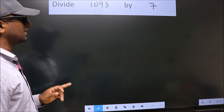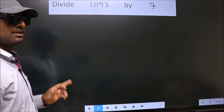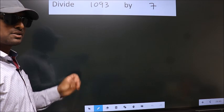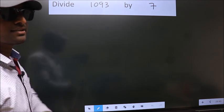Divide 1093 by 7. To do this division, we should frame it in this way.